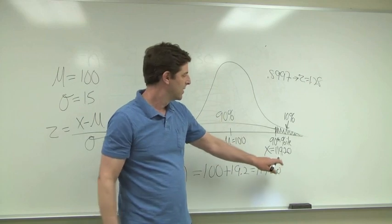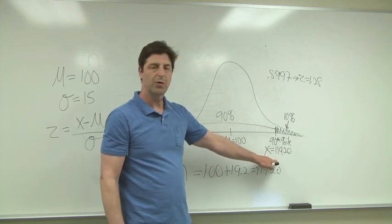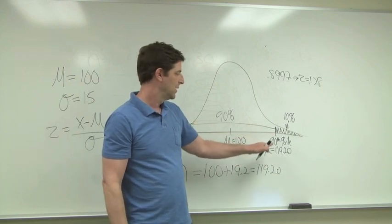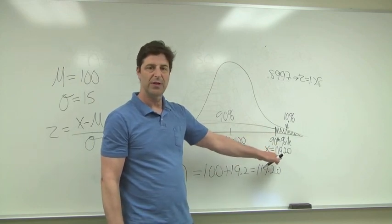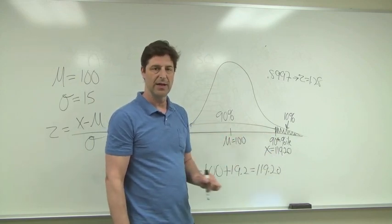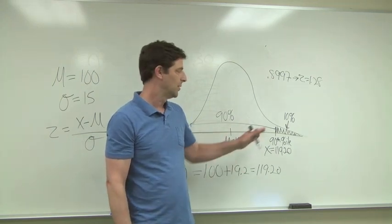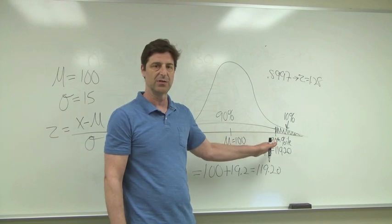And then we just wrap words around it. The raw score that marks the 90th percentile of this distribution is 119.20 on the IQ test, where an IQ score of 119.20 marks the 90th percentile of this distribution.